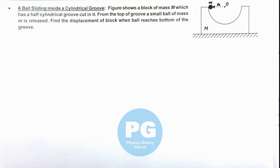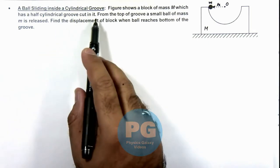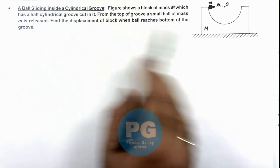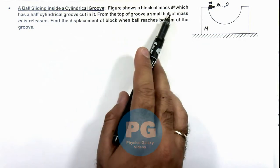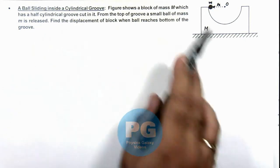In this illustration we'll discuss a ball sliding inside a cylindrical groove. The figure shows a block of mass M which has a half cylindrical groove cut in it.